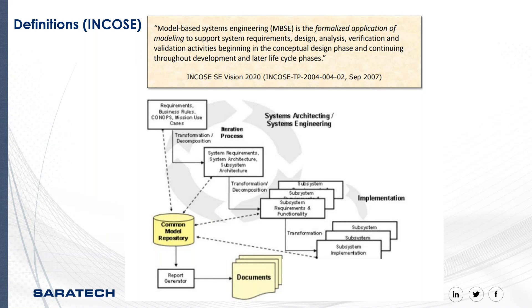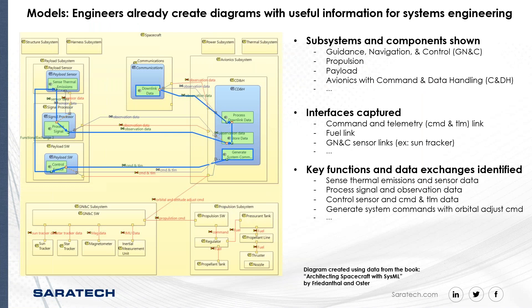Instead of documents being the heart of the process, the model repository is the heart of the process. Documents are generated by pulling information out of the model via report generators. A reason why model-based systems engineering fits so well with current engineering processes is that engineers are already trained to think and work visually — an engineer typically creates diagrams of whatever they're working on, and those are very useful for systems engineering.